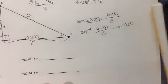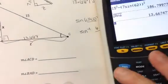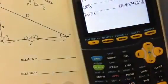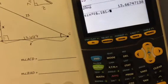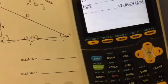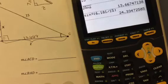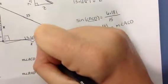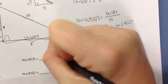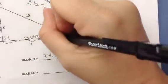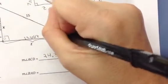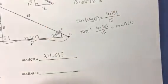We're going to take our inverse sine, so second sine, and plug in 6.181 divided by 15. We get 24.335 when we round that. So this is approximately 24.335 degrees.